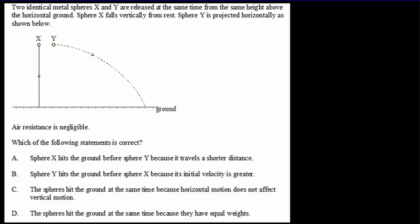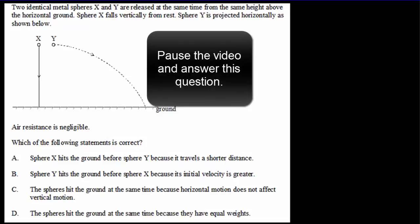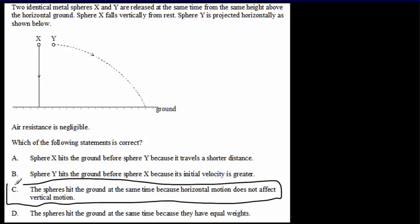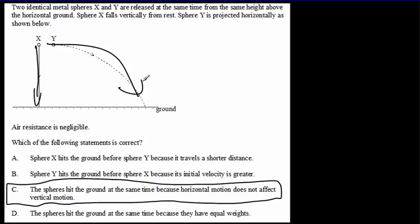I have two IB questions for you to see if you understand the idea of independence of motion. Here's the first question — pause the video, read it over, try it out for yourself, come back for the answer. Hopefully you said C: whether it drops straight down or is projected outwards, if it's launched horizontally, it's going to hit the ground at the same time. That's because of the independence of horizontal and vertical motion.